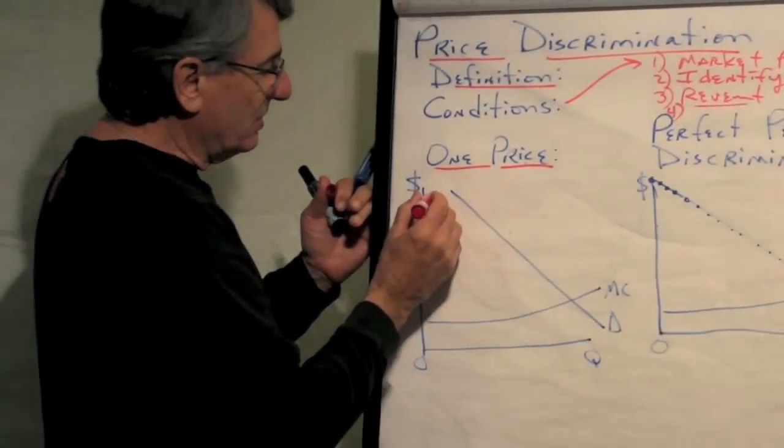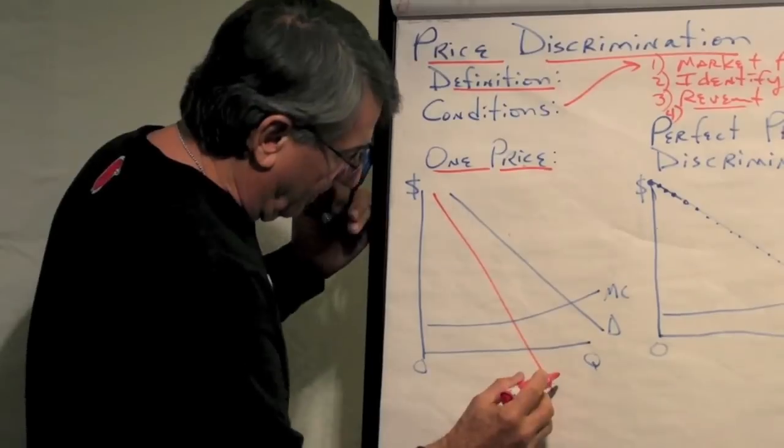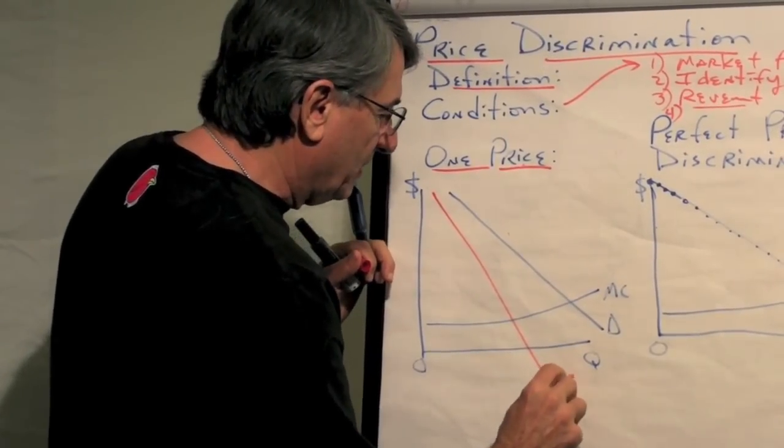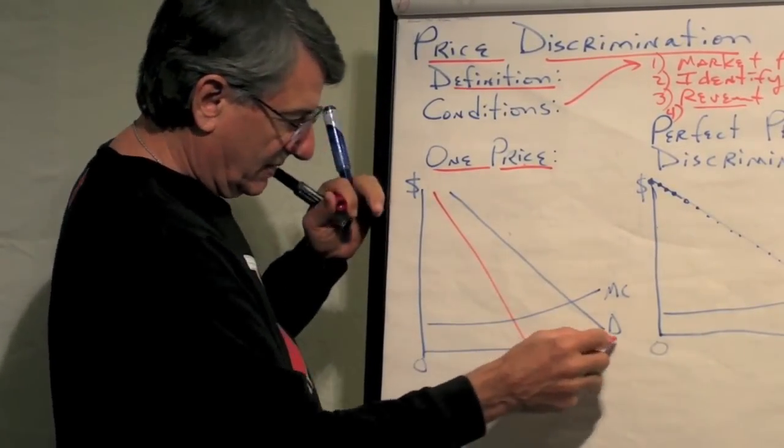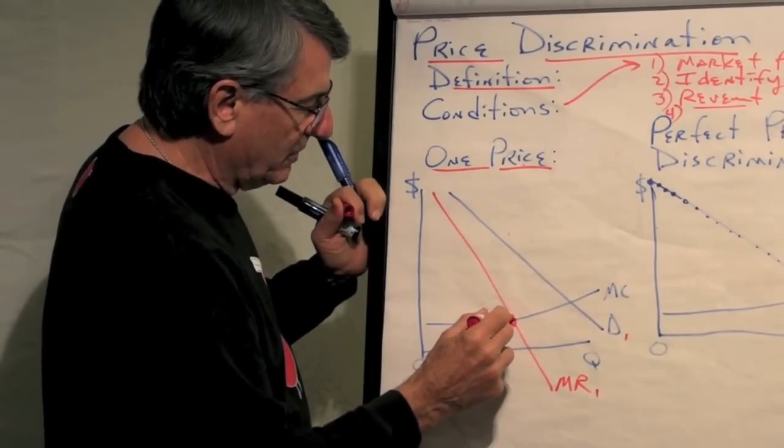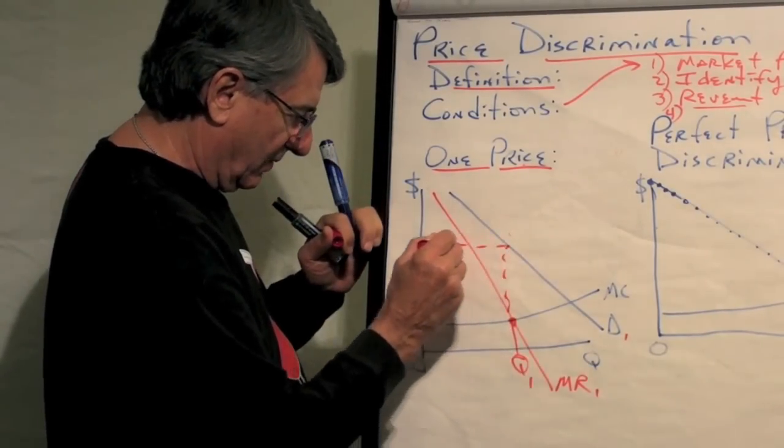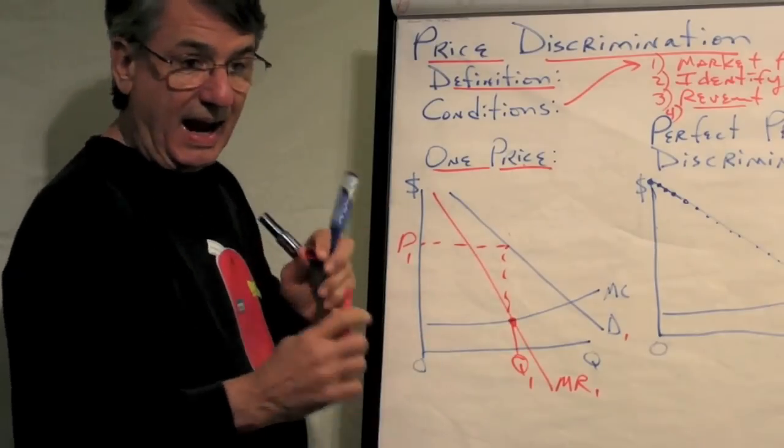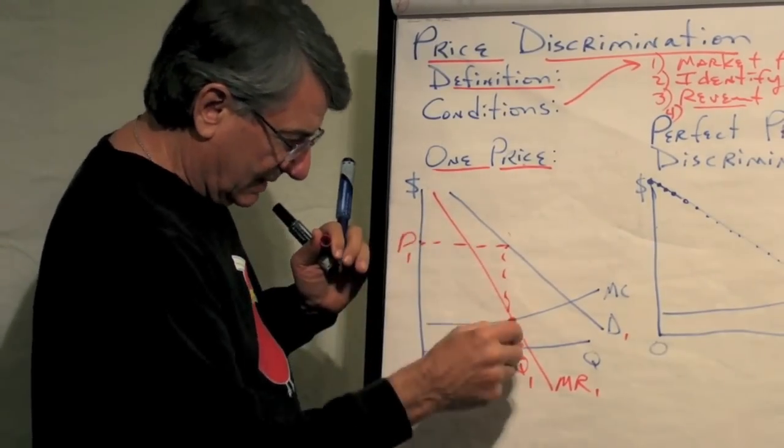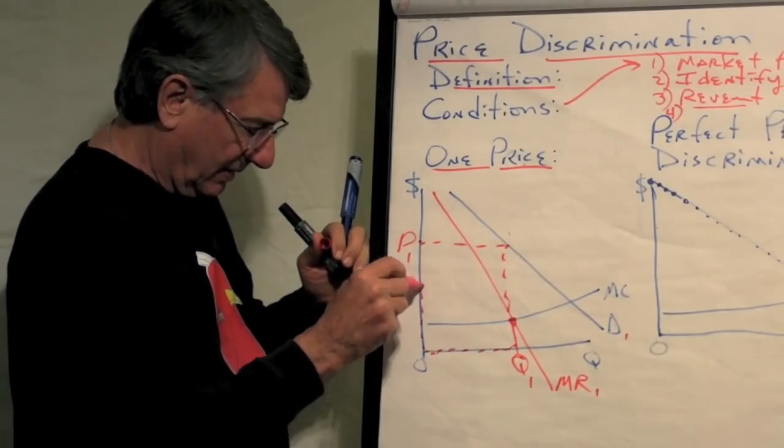So let's compare one price before I show you the price discrimination. If this is a price searcher and they are going to charge one price to everyone, then this would be the marginal revenue. Remember, it has twice the slope of the demand curve here. And they would produce this quantity, Q1, where marginal revenue equals marginal cost and they would charge price P1. And their total revenue would be price times quantity, so it would be this red rectangle here.